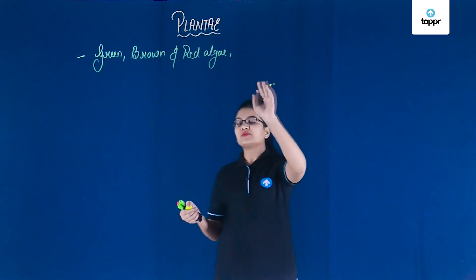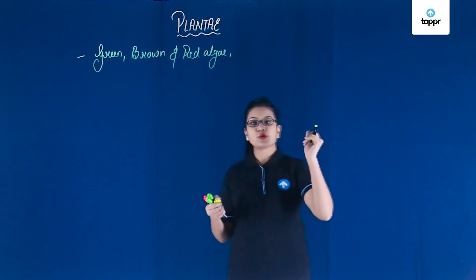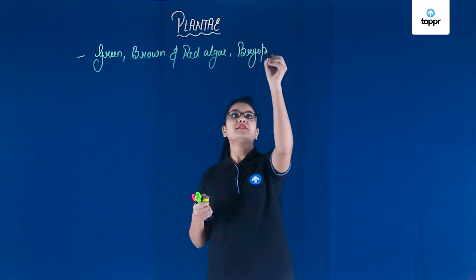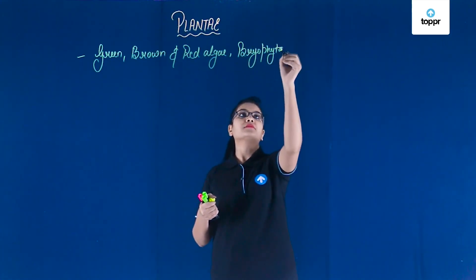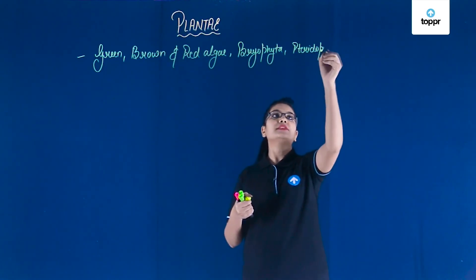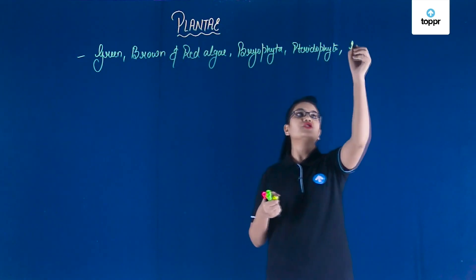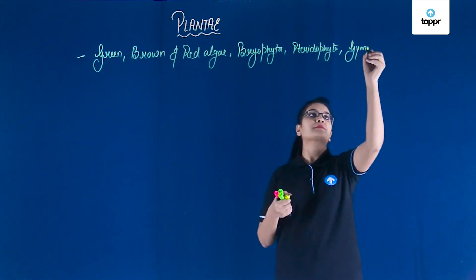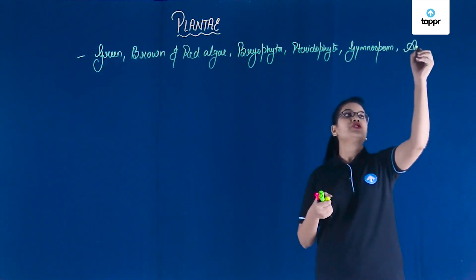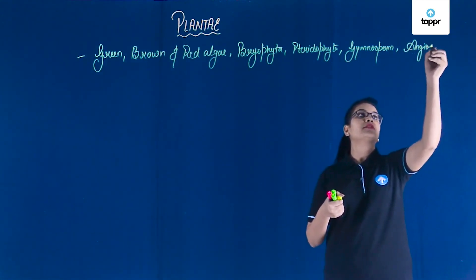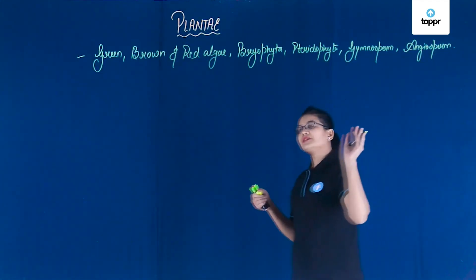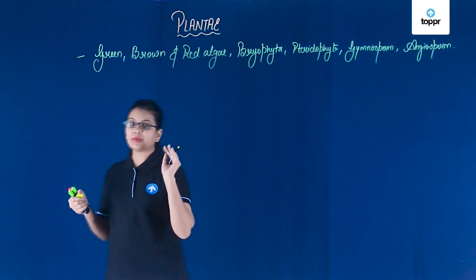These are the types of algae. Other than that, there are other groups also. For example, Bryophyta, Pteridophyta — other than these two, you will also see gymnosperm and angiosperm, which are the flower-bearing, seed-bearing plants. So these are the types of groups which are all included under kingdom Plantae.